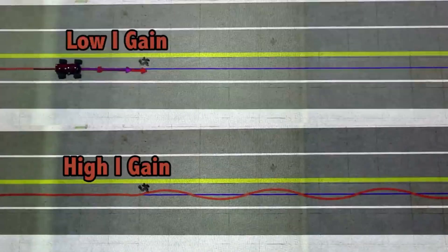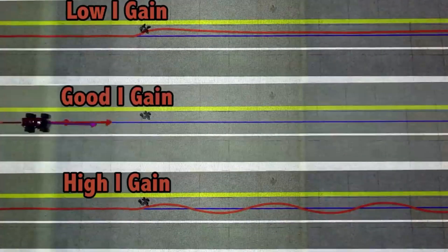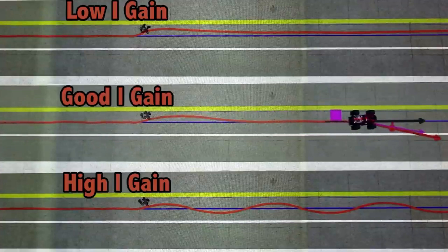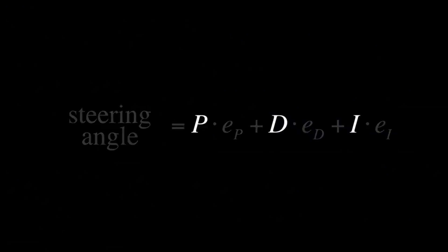Too high a value of KI results in oscillation and instability, while too small a value of KI leads to a longer time to reduce steady-state error. As shown, a low KI was not able to make the drive go in a straight path, while a high KI causes the drive to oscillate around the mean line. Combining these three terms we get our full PID controller — Proportional, Integral, Derivative.